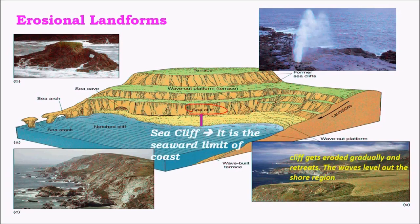Sea cliffs are the seaward limit of the coast. They are formed due to successive erosional processes where the higher standing landform is successively eroded from bottom to top, giving rise to a cliff structure that stands higher compared to sea level. These cliffs get eroded gradually, and the waves level out the shore region. The wave-cut platform is simply a platform formed due to successive erosion of sea cliffs.